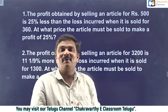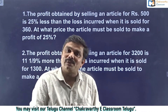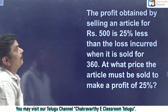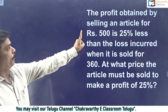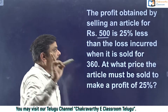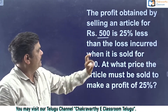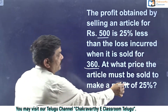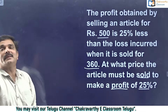I will show you that method. We discuss these types of methods in our regular courses. Take the first question. Read the question properly: the profit obtained by selling an article for 500 rupees is 25% less than the loss incurred when it is sold for 360 rupees. At what price must the article be sold to make a profit of 25%?